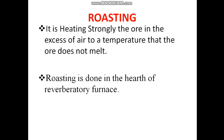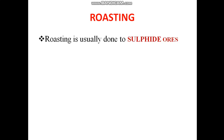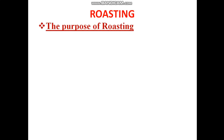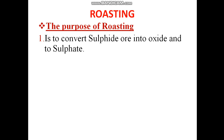Just as in calcination, roasting is also done in the reverberatory furnace. Here the doors are kept open. Roasting is usually done to the sulphide ores. Here is a look at the reverberatory furnace in which the doors are being kept open. Roasting is carried out for the sulphide ores. The purpose of roasting is to convert the sulphide ore into oxide and sulphate.